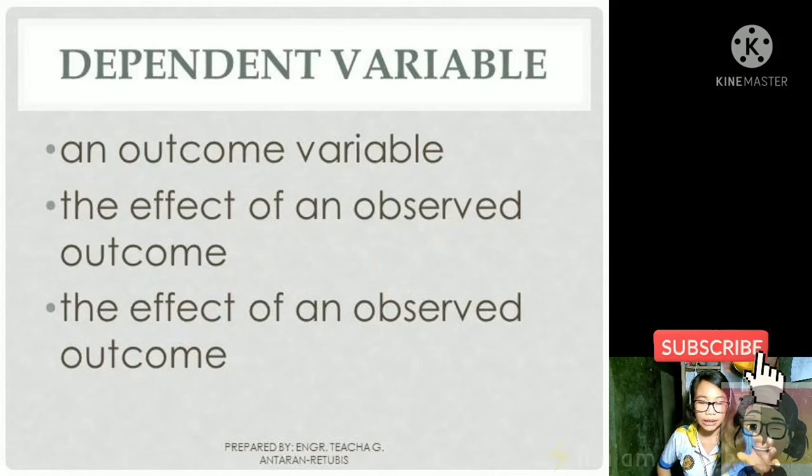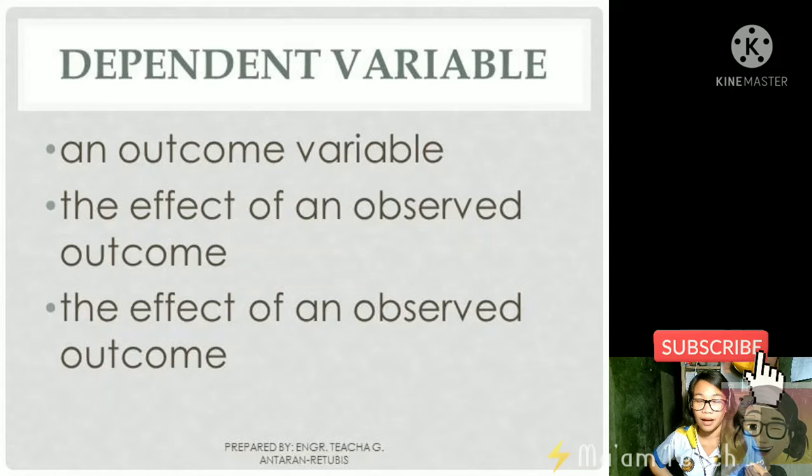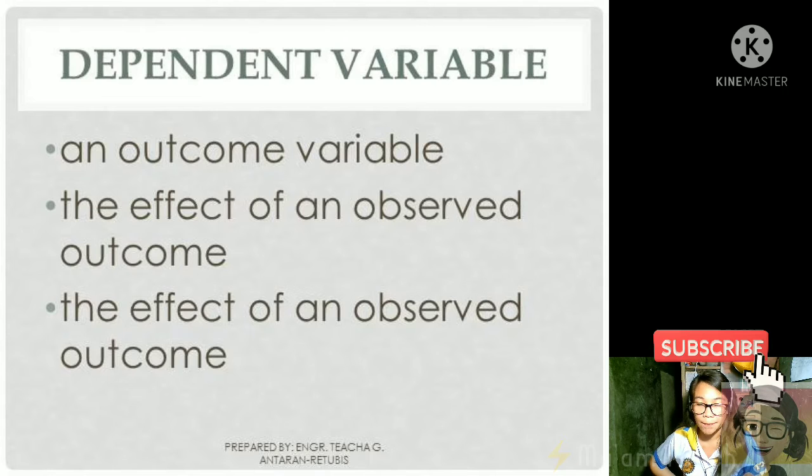Like for example, in a plant. For example, you are studying the behavior of a plant. Let's say your plant is still a seed. Now, your independent variable is, let's say, the seed itself.